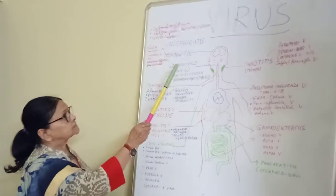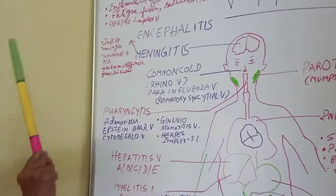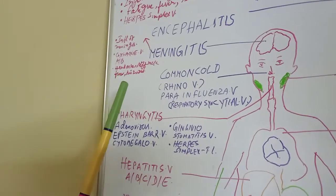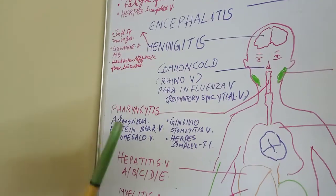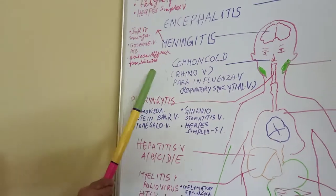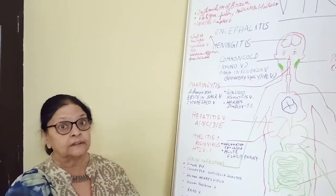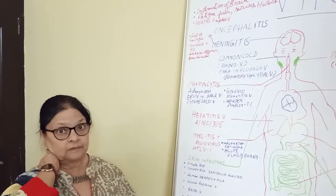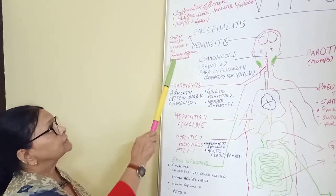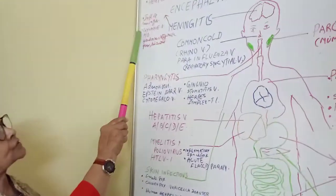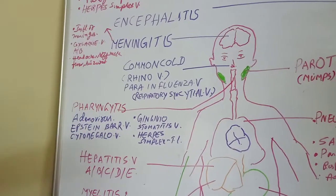Symptoms of meningitis include headache, stiff neck, fever, and seizures. Meningitis affects the brain as well as the spinal cord, which is why stiff neck is one of the symptoms. It is caused by Coxsackievirus types A and B.